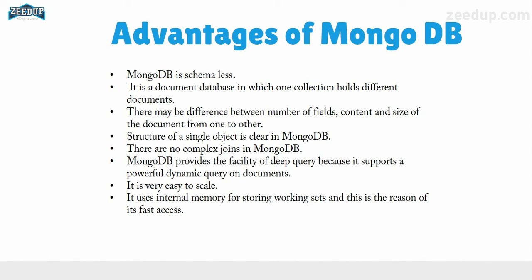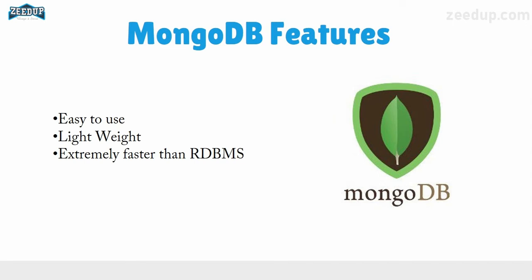It is very easy to scale, and that is one of the biggest advantages of MongoDB over RDBMS. For example, if you have a column value like 'comments,' you can easily make a list and add as many values as you want. In RDBMS you would need to create a table or column for comments, and there cannot be millions of columns in a table. MongoDB uses internal memory for storing working sets, which is why it has high performance and data is accessible very fast.